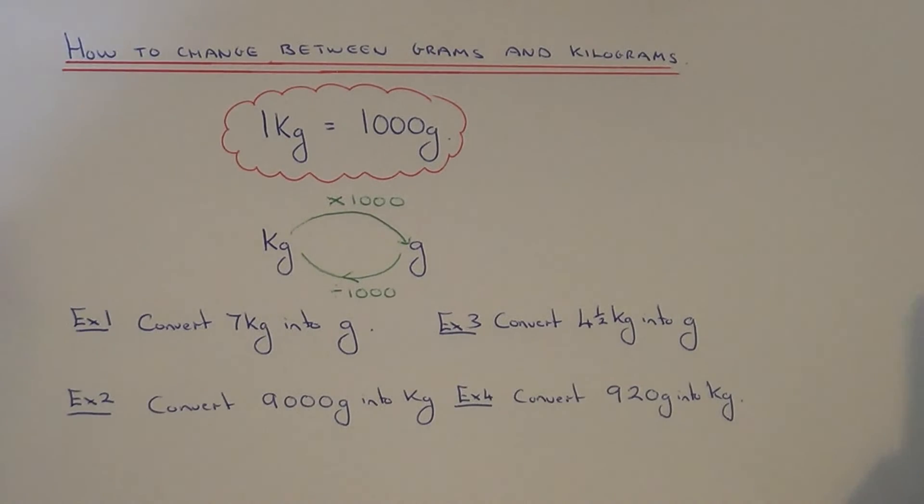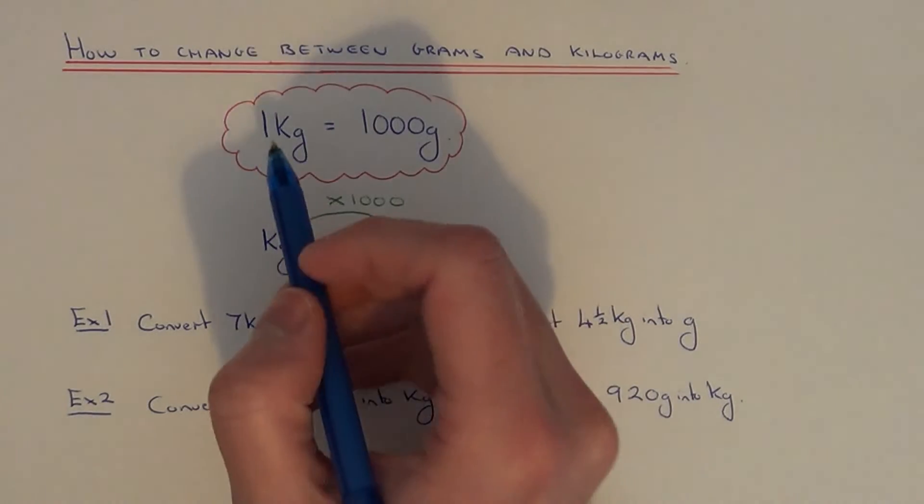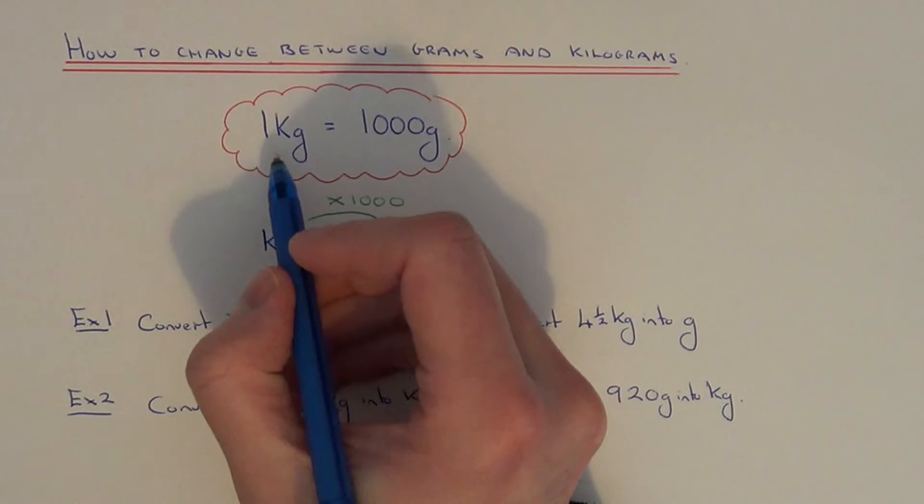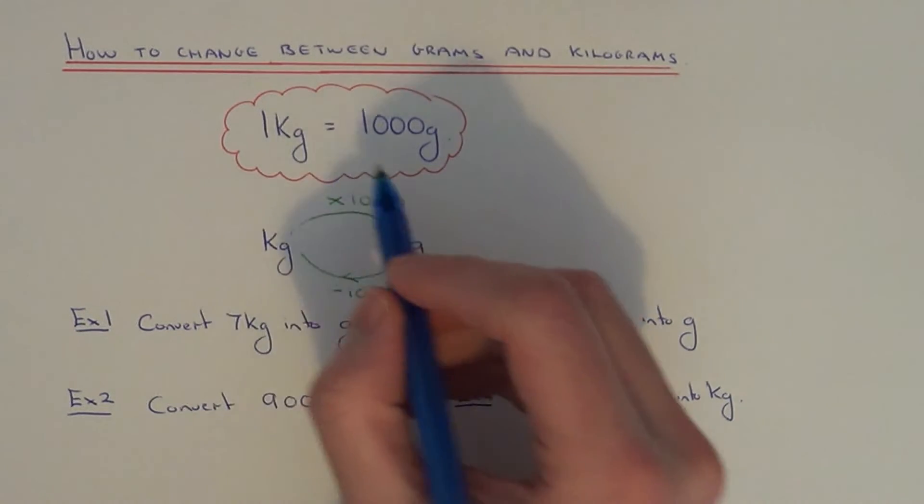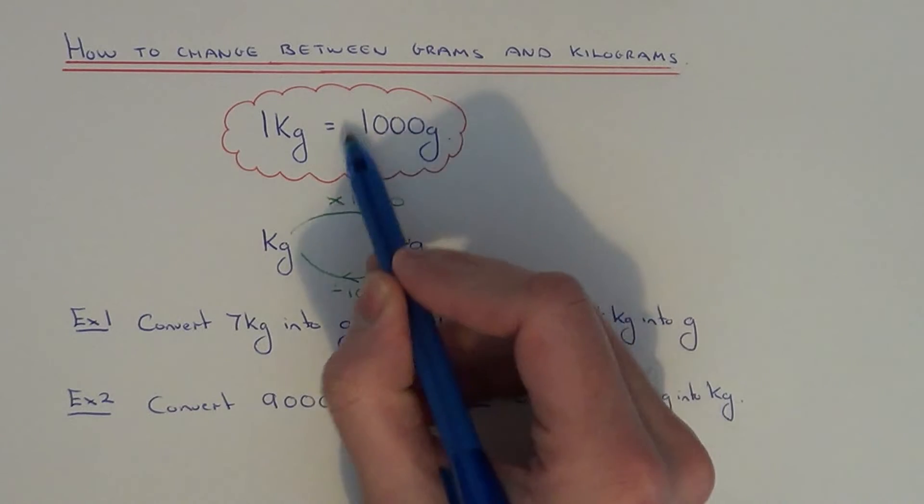Today I want to show you how to convert between kilograms and grams. A kilogram is about the weight of a bag of sugar or a bag of flour, and in a kilogram there are a thousand grams.